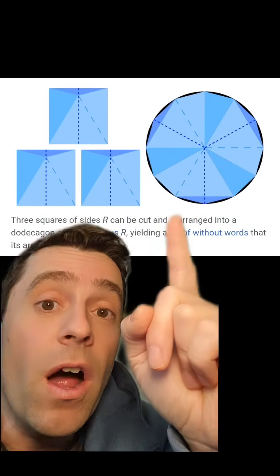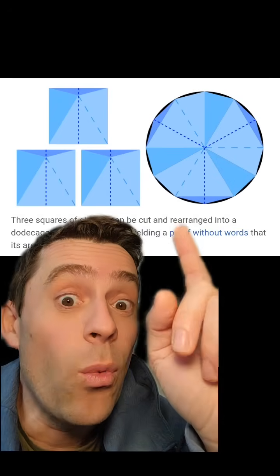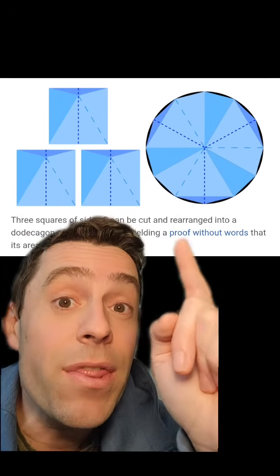Therefore, the area of the dodecagon is 3r squared, and when r is 1, the area of the dodecagon is exactly 3.